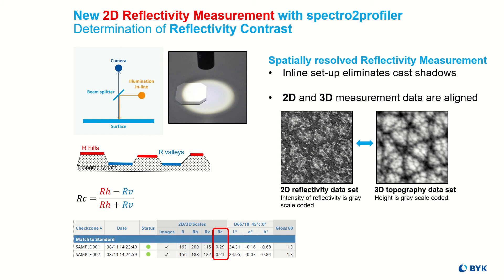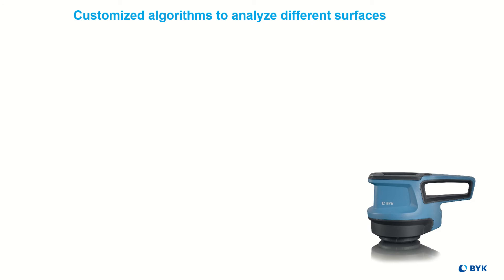Back to our samples: Sample 1 has a higher contrast, which correlates with the visual impression. Color and 60-degree gloss values could not differentiate the two samples.